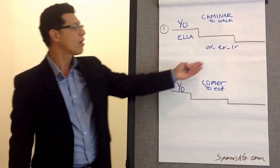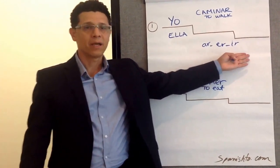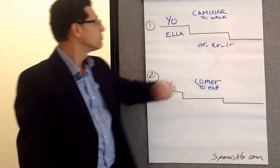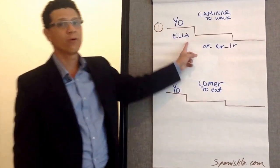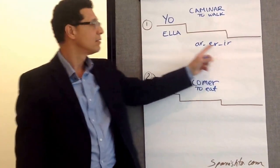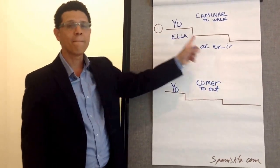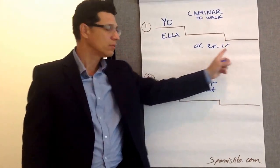And at the bottom, we'll have an object, okay? So: subject, verb, object — or sender, message, and receiver, okay?